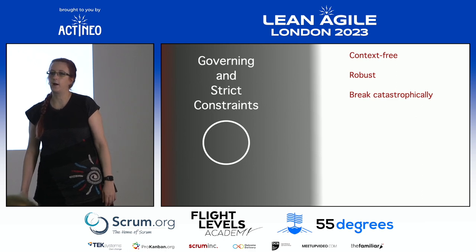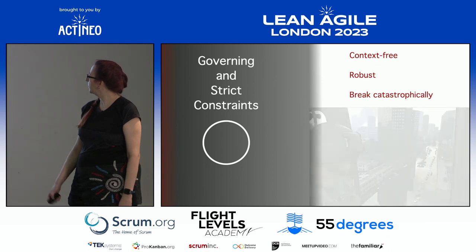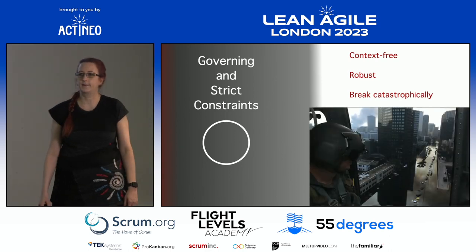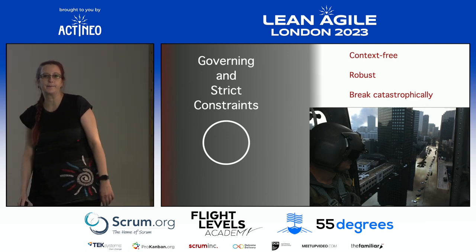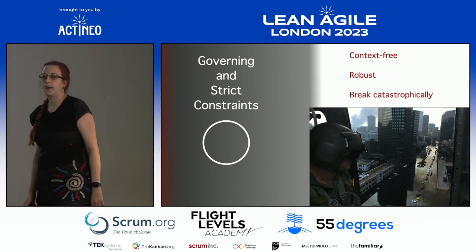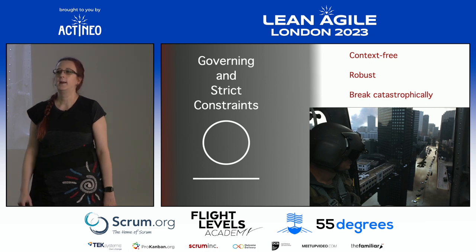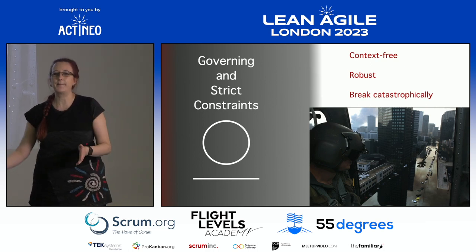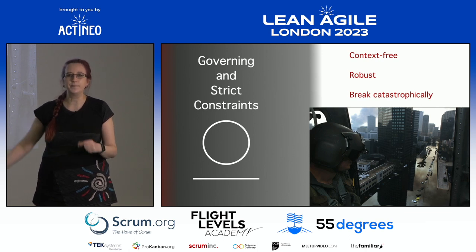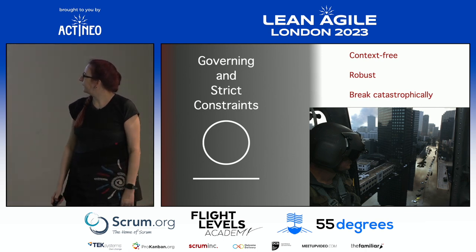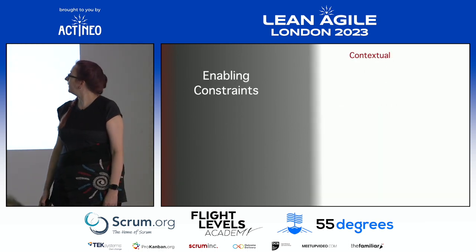Dave Snowden uses the example of a sea wall — it's a fine thing to have until it breaks, as it did in Louisiana during Hurricane Katrina. You can see the road completely flooded. You get catastrophe. Constraints can also be tethers that either snap into place or have some elasticity. In contrast, an enabling constraint is usually permeable and contextual — it doesn't always apply, you can choose when to.